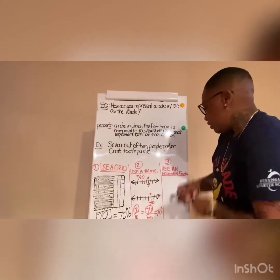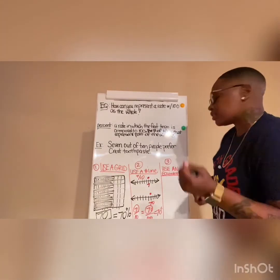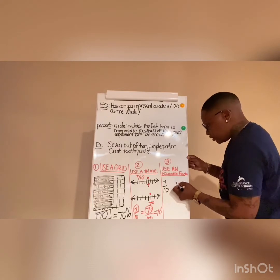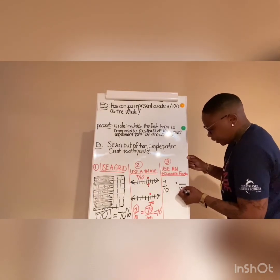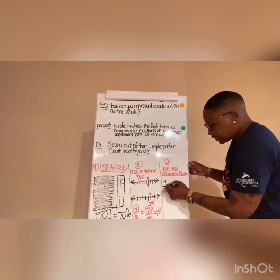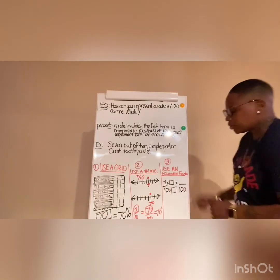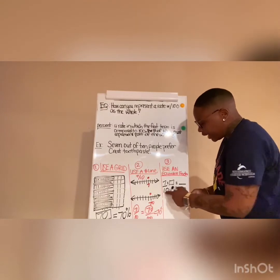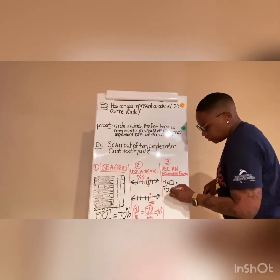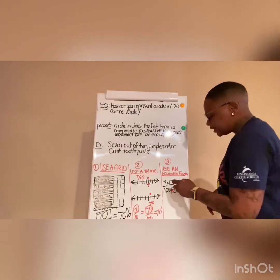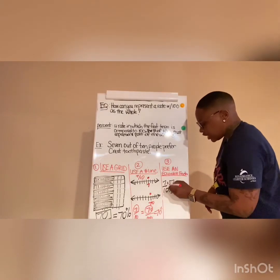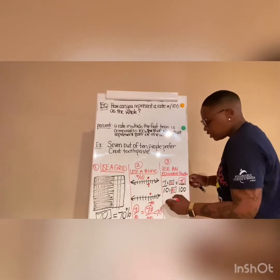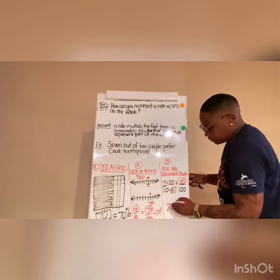My favorite way to write percent is to simply use equivalent fractions. If I have 7 over 10, we know we want to get to 100 on the bottom. So we have to figure out what we multiply the top and the bottom by to give us 100 on the bottom. I know 10 times what number gives me 100 — 100 divided by 10 is 10. So 10 times 10 gives me 100. What I do to the bottom, I have to do to the top, so 7 times 10 gives me 70. As you can see, 70 has been used in all three of our ways to represent percents. So 7 over 10 is equal to 70 percent.